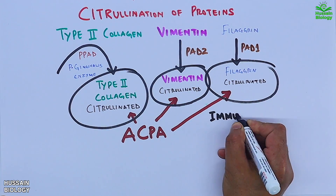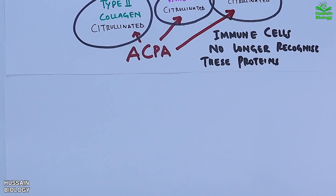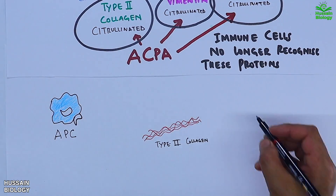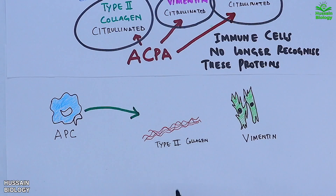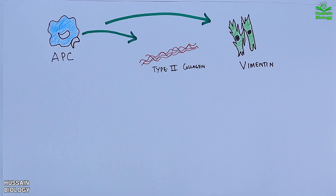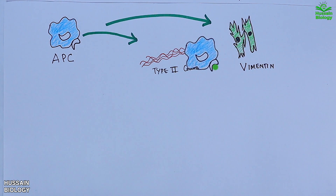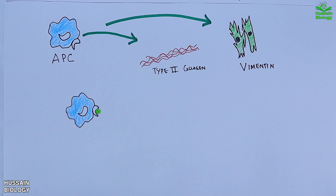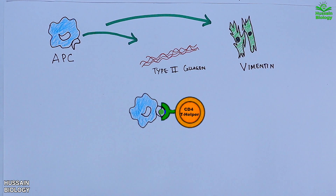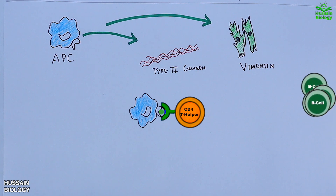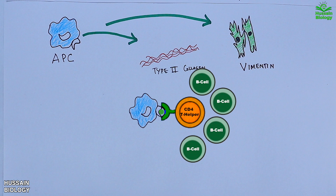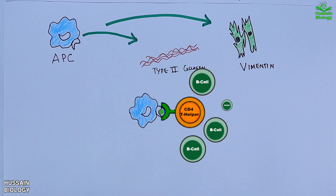The immune cells no longer recognize these modified proteins. As shown in the diagram, an antigen presenting cell (APC) picks up antigen from the citrullinated type 2 collagen and vimentin proteins. The APC then presents the antigen to CD4 T helper cells, which become activated and in turn stimulate B cells, driving their proliferation — as shown in the animation.